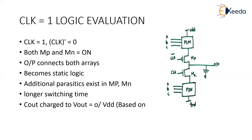MP and MN behave like a short, and due to the presence of parasitic capacitance and resistance — tau equals RC — the switching time will be longer. My output capacitor Cout will be charged to Vout, and Vout will be either 0 or VDD based on my inputs. When my pull-up network and pull-down network are ON and OFF accordingly, my output will stay at 1 or 0 based on inputs, because the circuit behaves like static logic when in logic evaluation state.